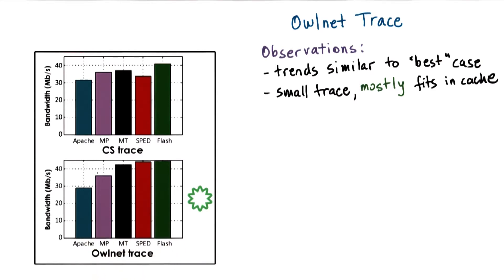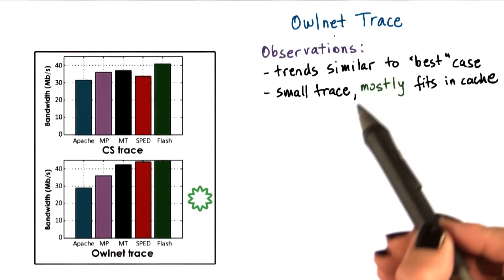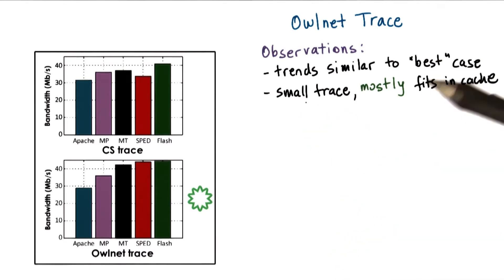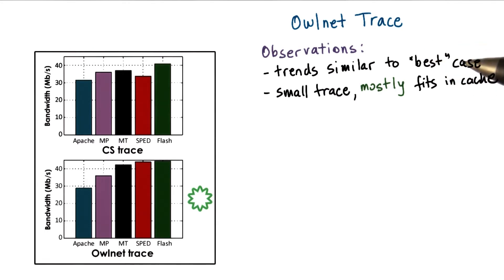Note that we're not including the Zeus performance. The reason for this trend is because the OwlNet trace is the small trace. So most of it will fit in the cache, and we'll have a similar behavior like what we had in the best case, where all the requests are serviced from the cache.